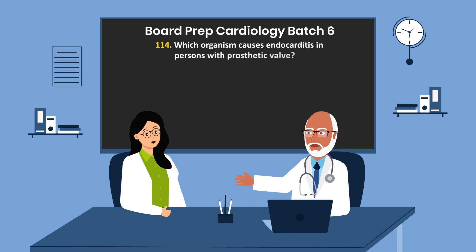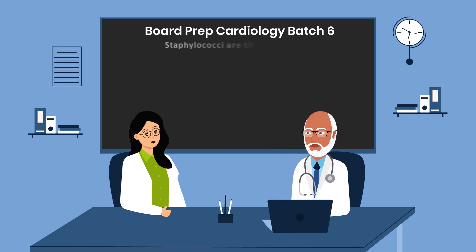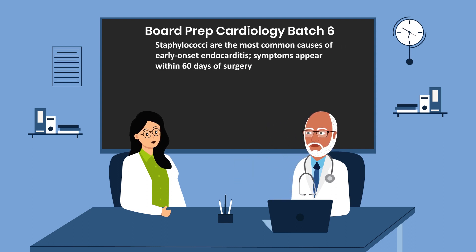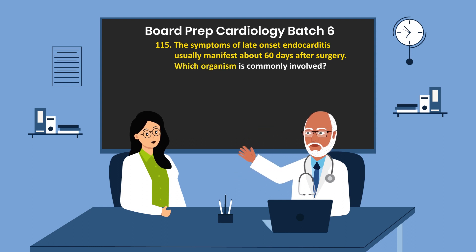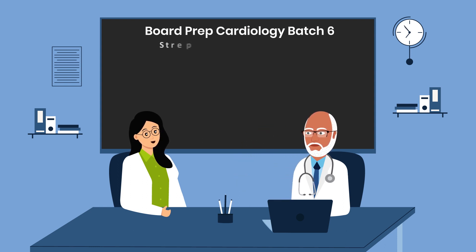Question 114. Which organism causes endocarditis in persons with a prosthetic valve? Staphylococci are the most common cause of early onset endocarditis, with symptoms appearing within 60 days of surgery. Question 115. The symptoms of late onset endocarditis usually manifest about 60 days after surgery. Which organism is commonly involved? Streptococci.